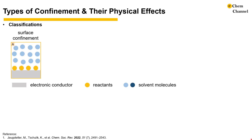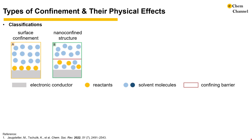The monolayer can alter the electronic structure of the electrode and can be used for electrochemical sensing and electrocatalysis. Number B involves solvated reactants whose movement is limited by the confining barriers, like 2D-layered materials or 1D nanotubes. The confinement places an impenetrable barrier in close vicinity to the electrode, which will tune the adsorption properties. This has promising applications in electrocatalysis, which we will show in an example later.